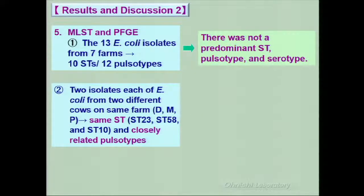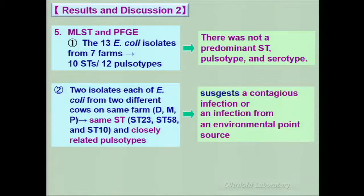2 isolates each of E. coli from 2 different cows on the same farm had the same ST, ST-23, ST-58, and ST-10, and closely related pulsotype. This suggests a contagious infection or an infection from an environmental point source.